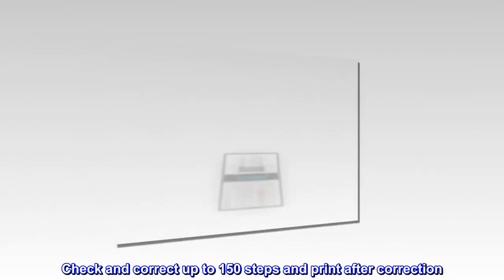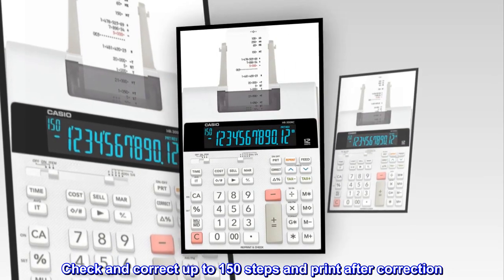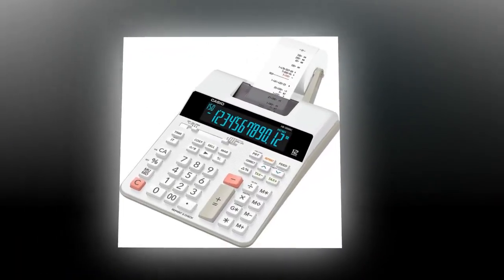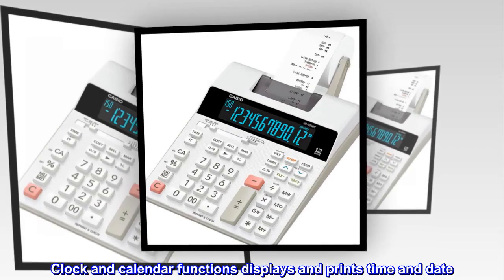Check and correct up to 150 steps and print after correction. Clock and calendar functions displays and prints time and date.